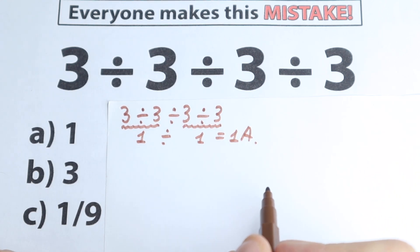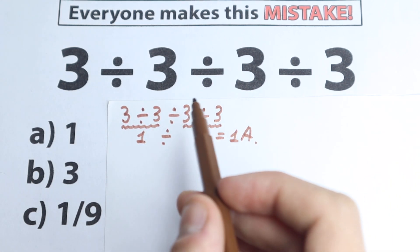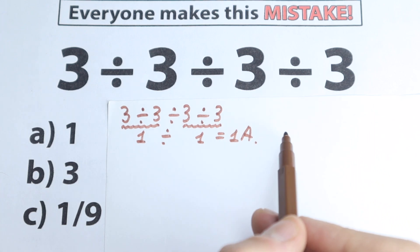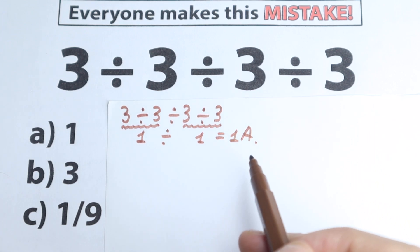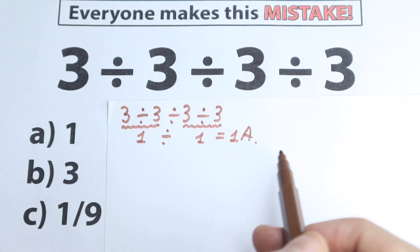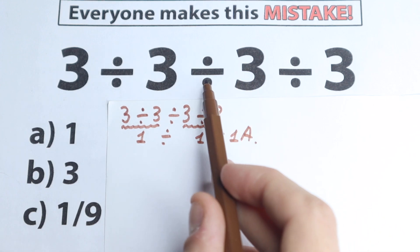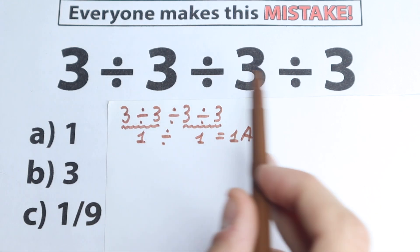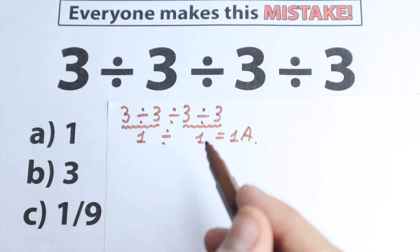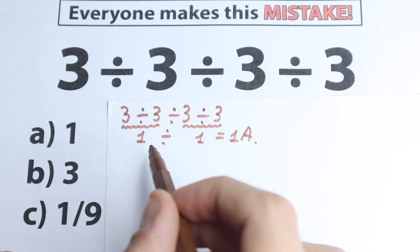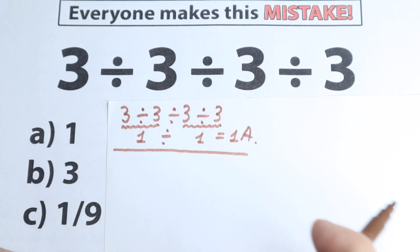Let's look at the correct order of operations, because obviously whatever order of operation we select is going to create a different answer. We need to understand what is the correct order: this division first, then this one — or this division, then this one. There are a lot of combinations, so let's solve it according to the correct order of operations.